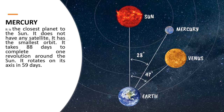Mercury is the closest planet to the sun. It does not have any satellite and has the smallest orbit. It takes only 88 days to complete one revolution around the sun, compared to Earth's 365 days. It rotates on its axis in 59 days, meaning it moves very slowly on its own axis.